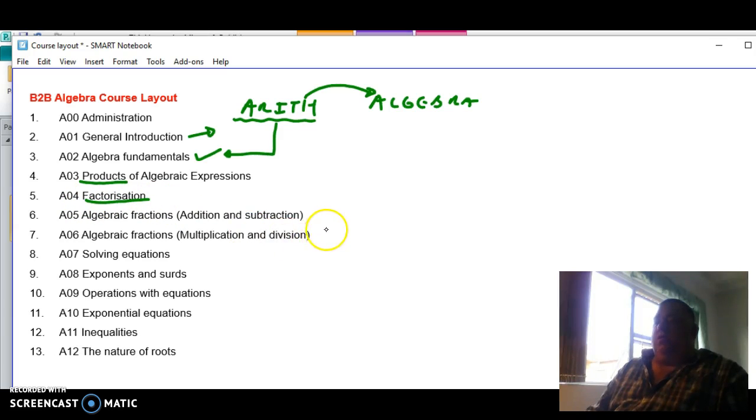And before we can continue with everything, we need to look at fractions in algebra. How do we add? How do we subtract? In fractions, algebraic fractions. These are fractions that have unknowns. How do we multiply fractions? How do we divide fractions?